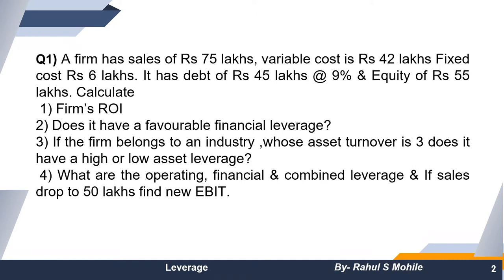The question is in this format: A firm has sales of 75 lakhs, variable cost of Rs 42 lakhs, fixed cost of 6 lakhs. It has debt of Rs 45 lakhs at a rate of 9% — meaning the interest rate is 9%. The equity value is given as 55 lakhs.